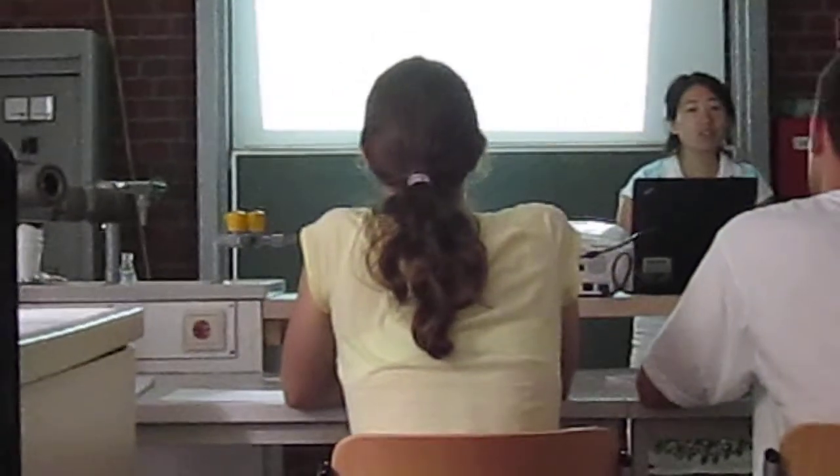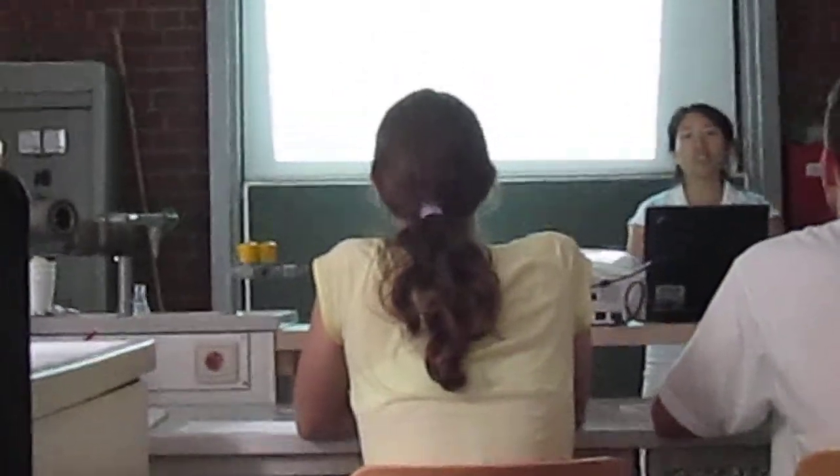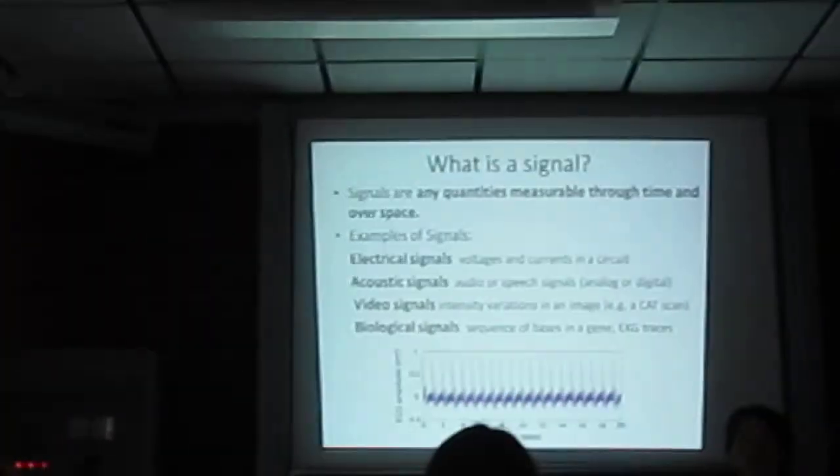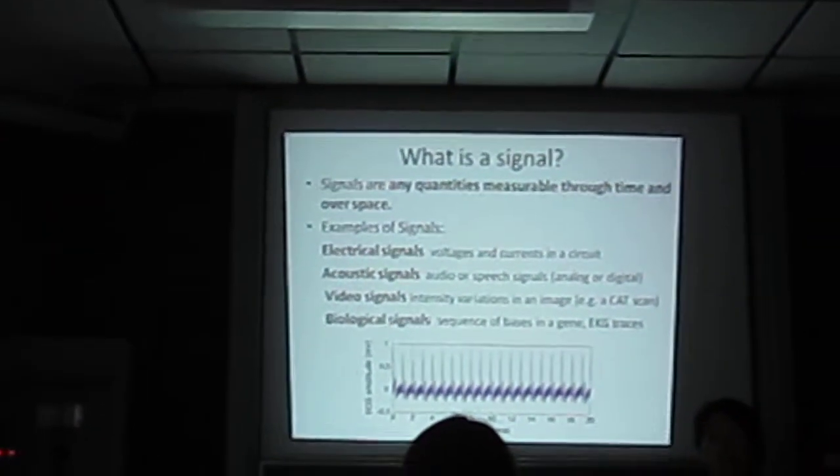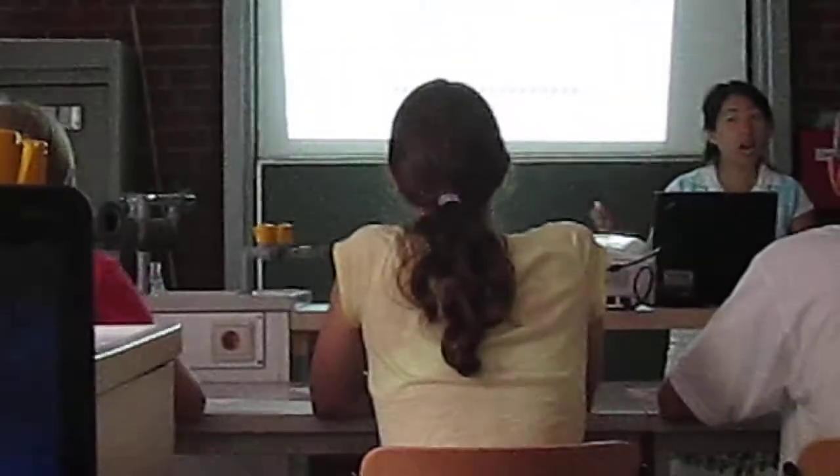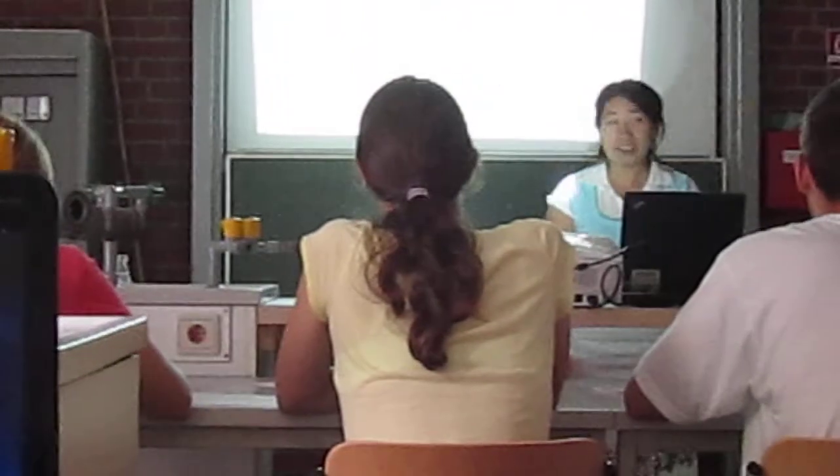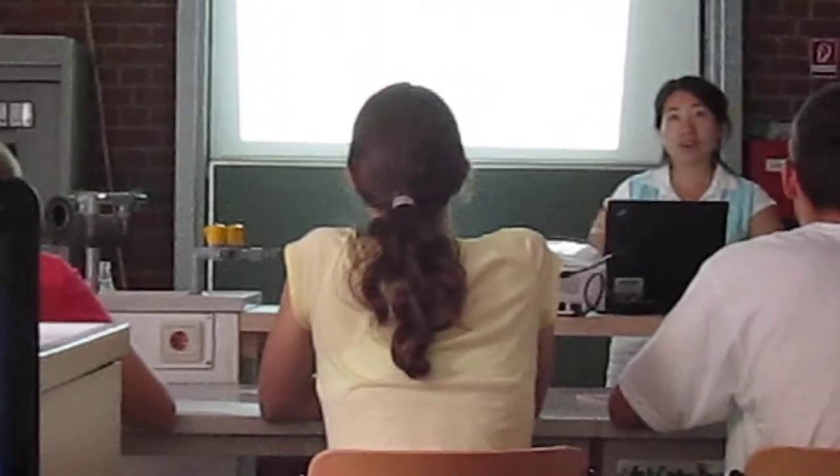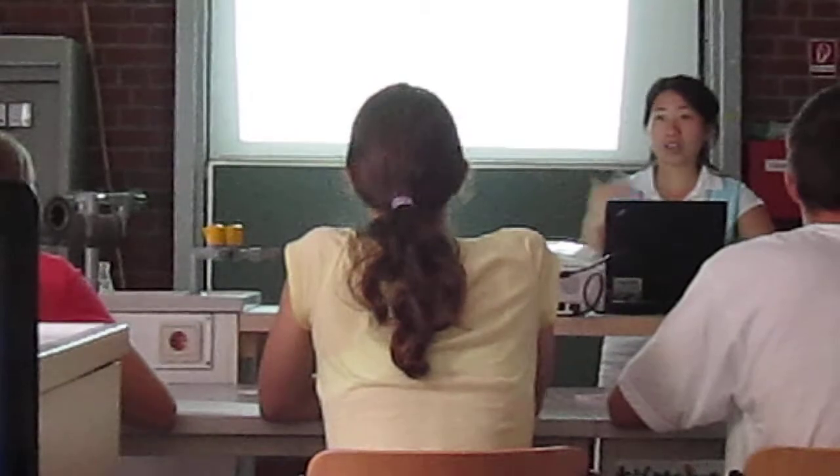So what is a signal? Signal is essentially information. It just means information, data. Signals are any quantities measurable through time and over space. Anything that can be graphed out in respect to time or space is a signal. If it's a signal, you're able to make a graph out of it.